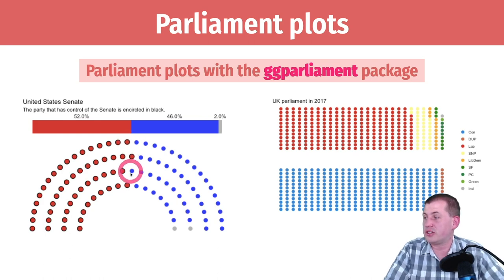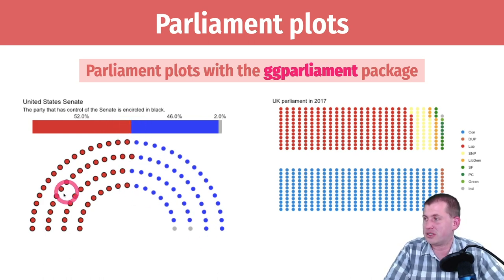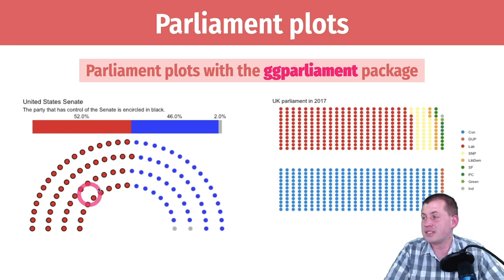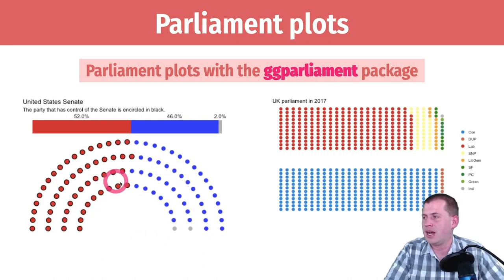This shows, along with the bar here, that the Republicans had control of the Senate at this point in history. This is essentially a pie chart — just half of a pie chart. But the fact that it is shaped like this matches the shape of the Senate chambers.